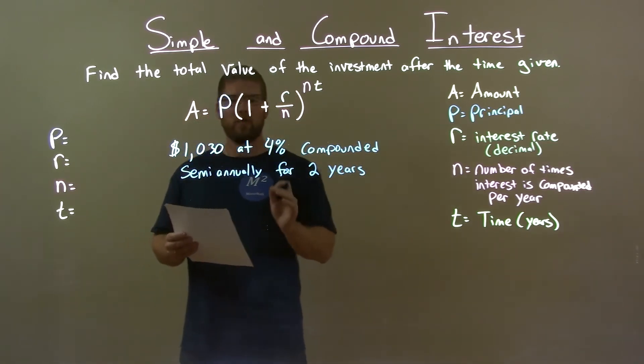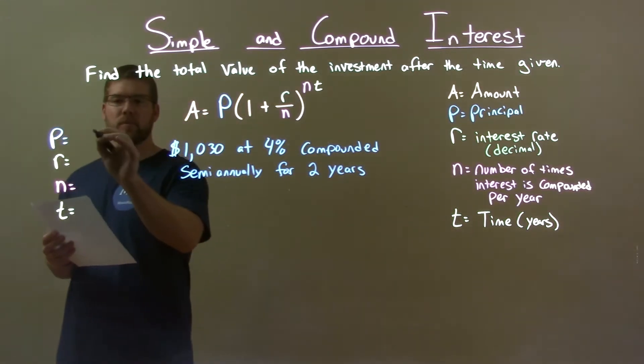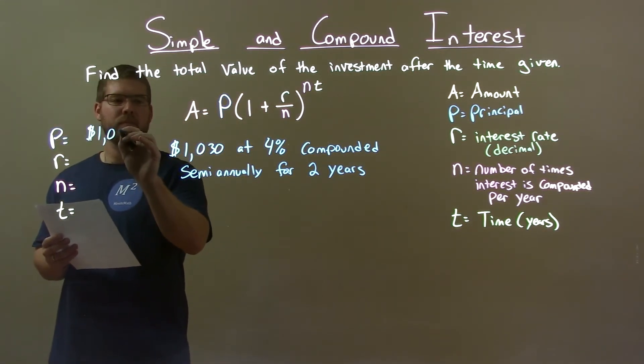Well first thing, I want to find my missing variables, extracting that from our problem. Now my principal, my initial amount, is $1,030.